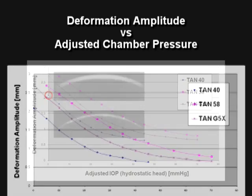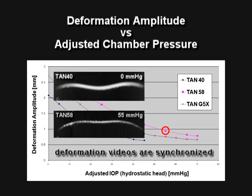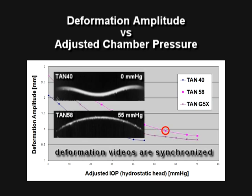The pressure significantly influenced the deformation response. For example, if we look at the stiffest lens, Tan 40, at zero pressure, and compare with the most pliable, Tan 58, at higher pressure, the deformation of the latter is less due to the impact of the pressure on the deformation response.